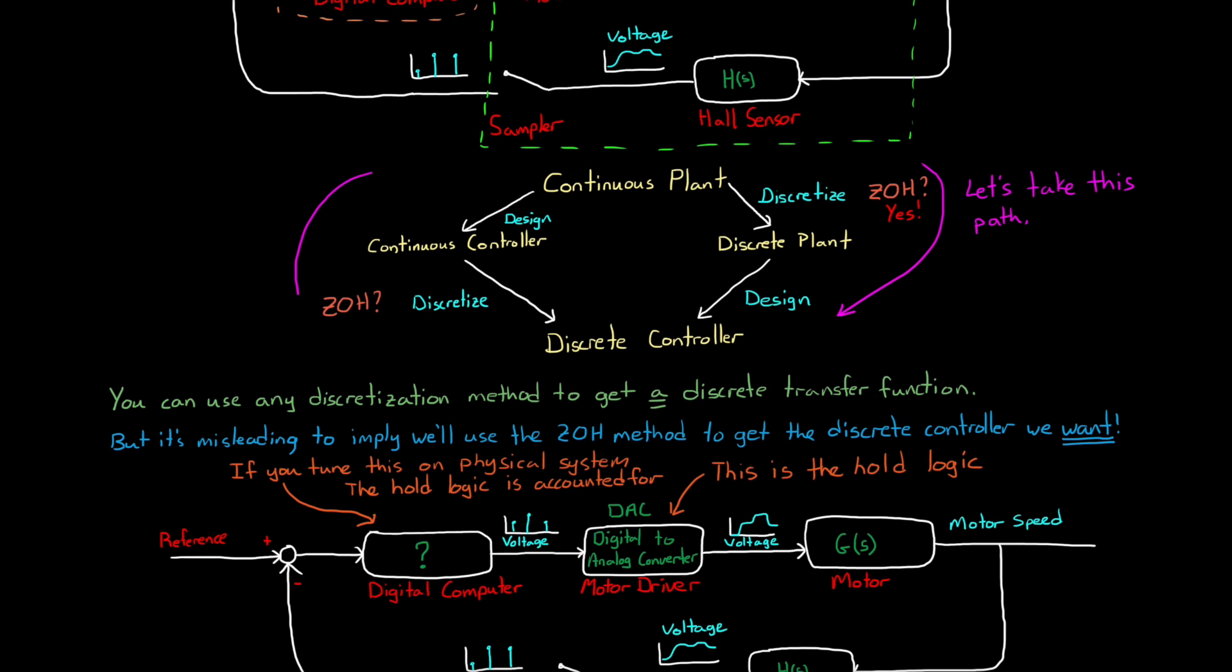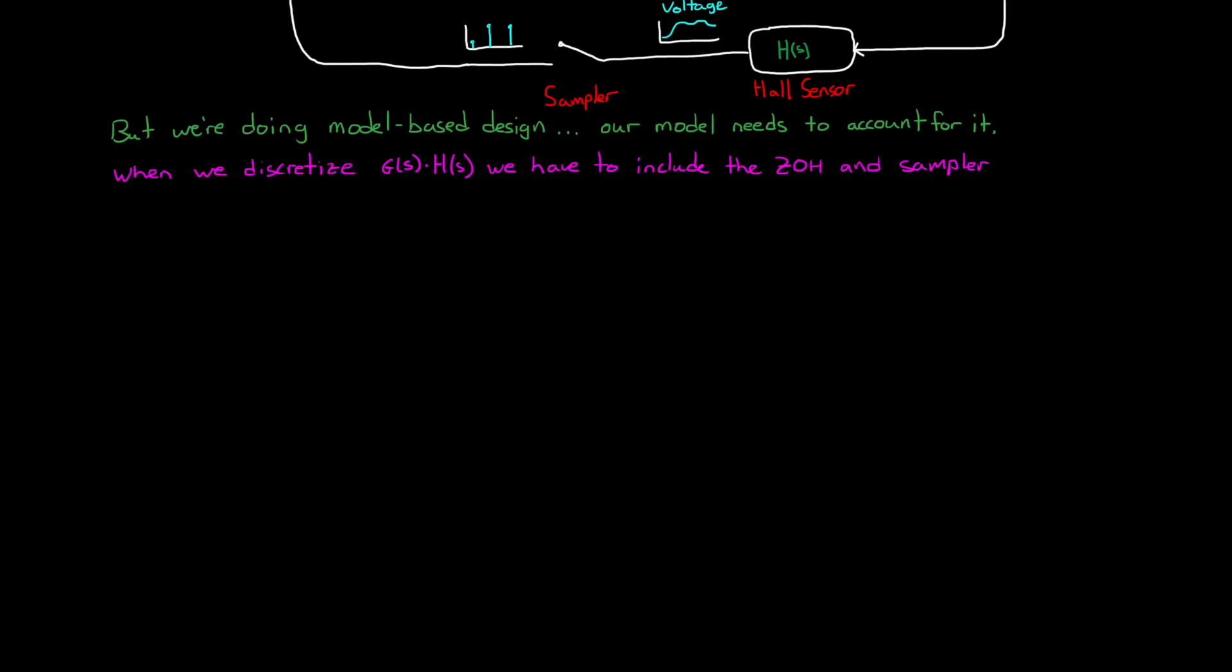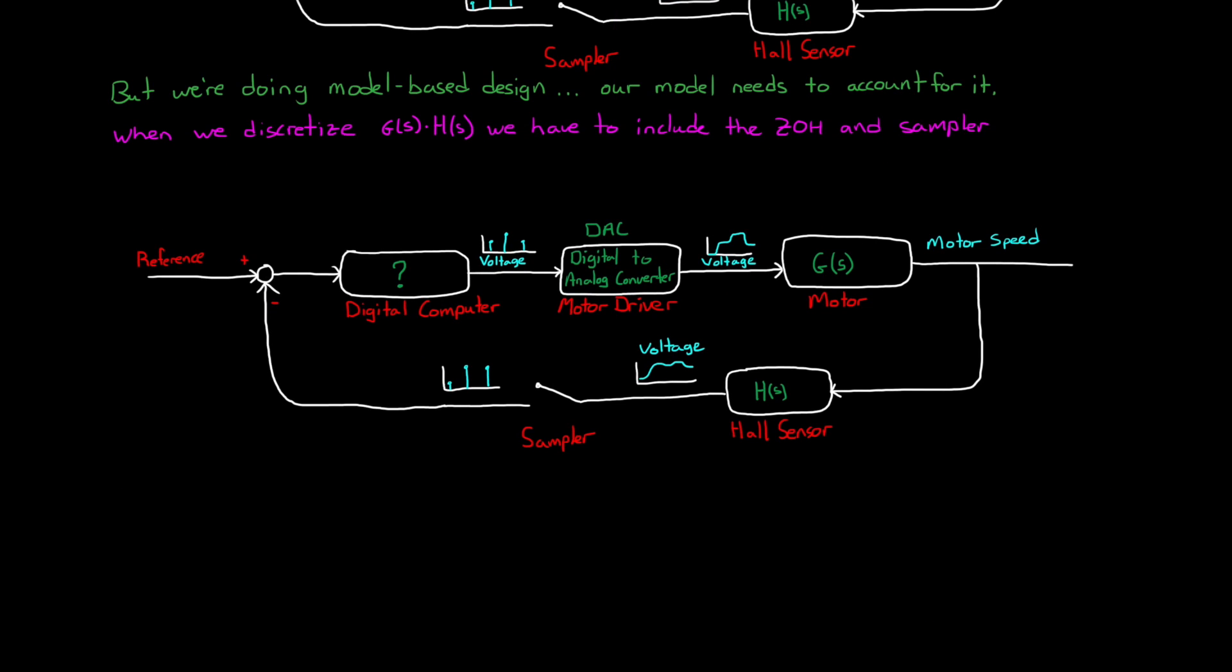But now let's look at the path where we first design a continuous controller with a completely continuous model. We design that controller using continuous domain control techniques like the root locus or Bode plots, and we get to a solution that we think will meet our needs. At this point, we have to convert the continuous controller, C(s), into a discrete controller, C(z), so that it will run on the digital computer.